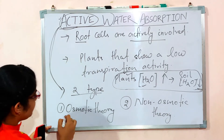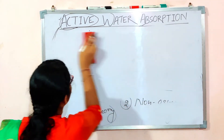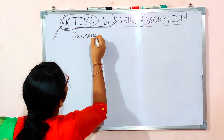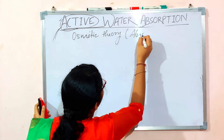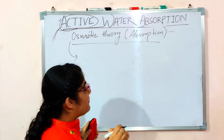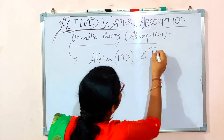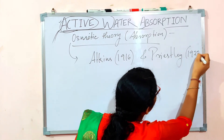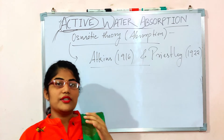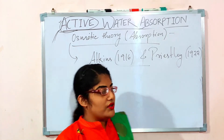Now let us come to the osmotic theory, also called osmotic absorption. This particular mechanism was proposed by two scientists: Atkins in 1916 and Priestley in 1922. According to this theory, the osmotic pressure or solute concentration of the cells of the root hair is higher in comparison to the soil water.